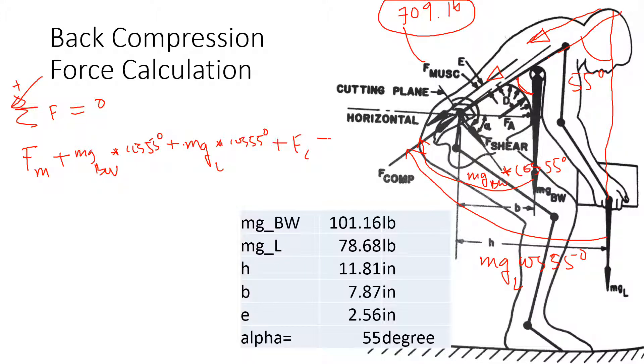So if I just plug all these numbers in: 709 pounds plus 78.68 pounds times cosine 55 degrees, plus 101 pounds for the load the person is trying to carry times cosine 55 degrees, plus Fc, everything sums to zero.